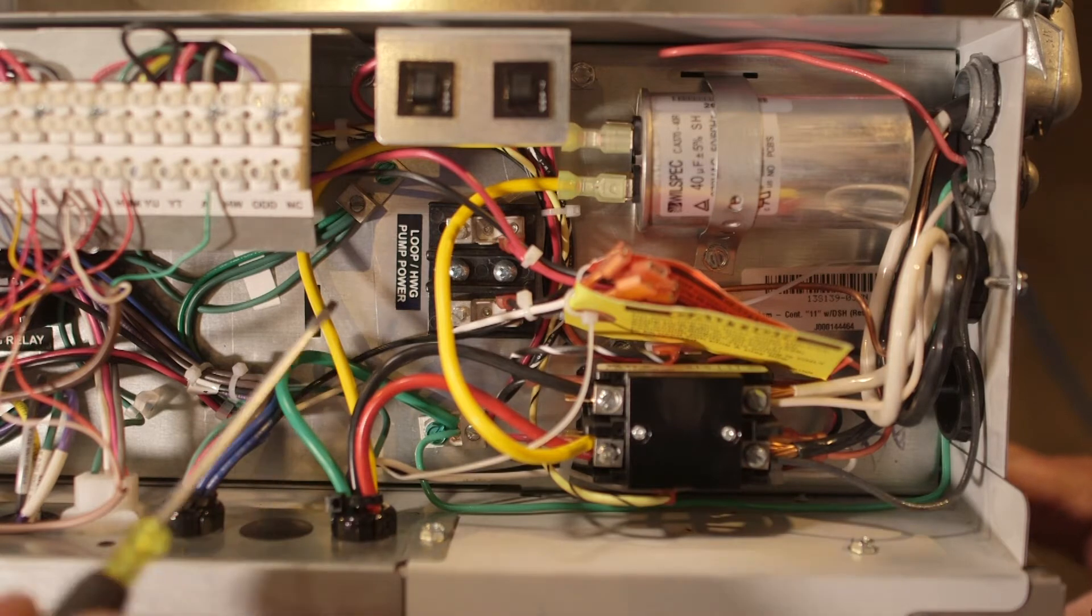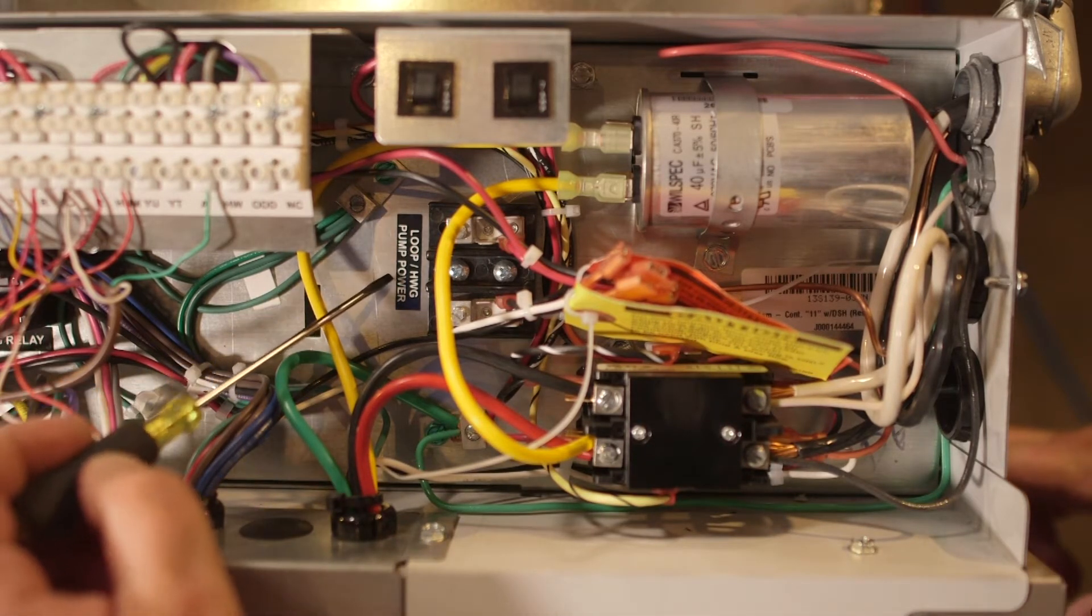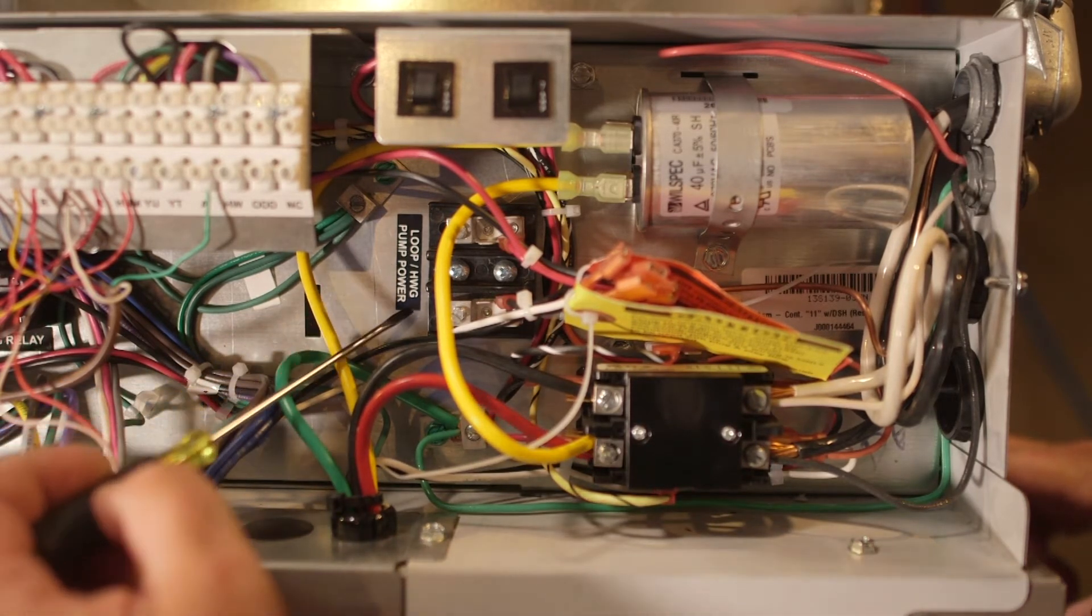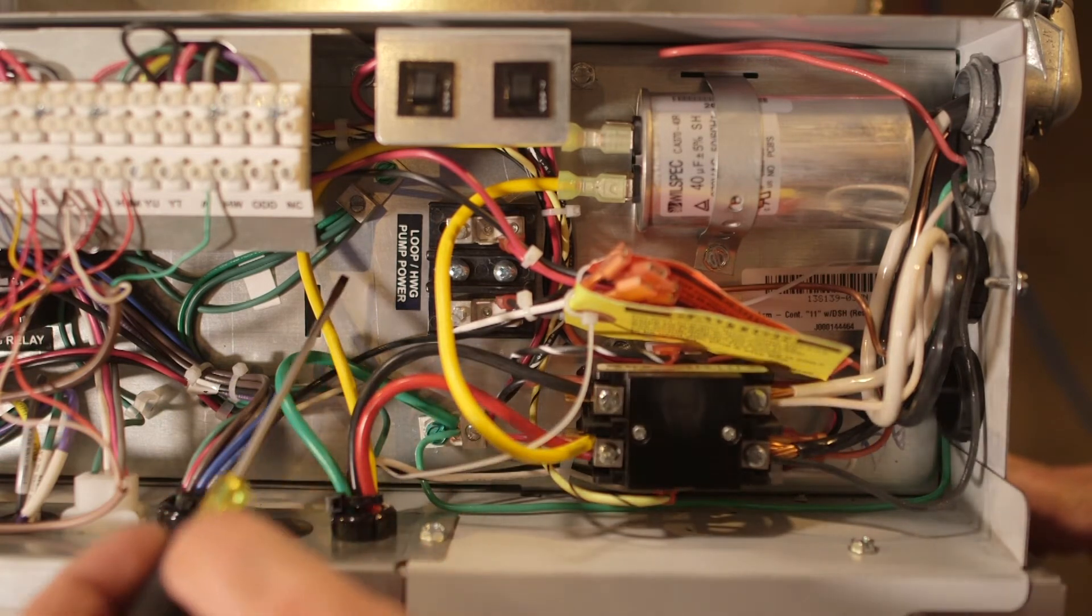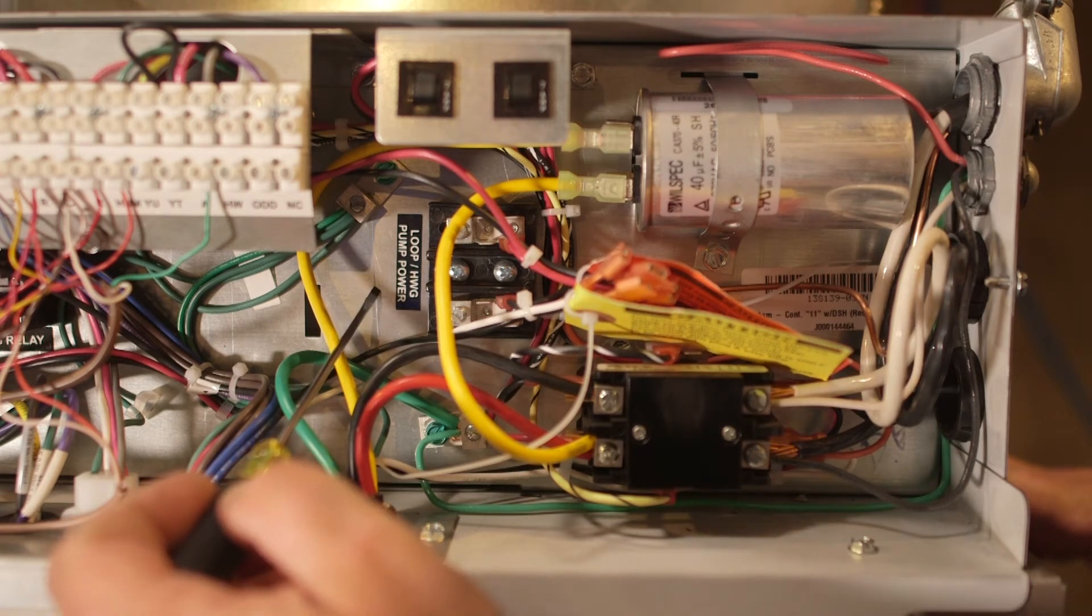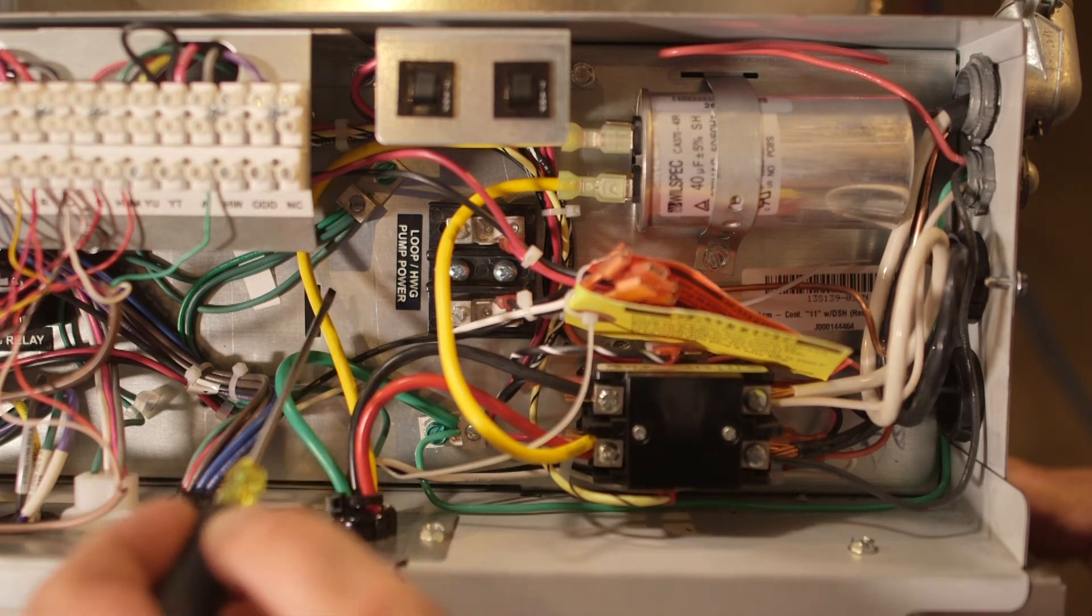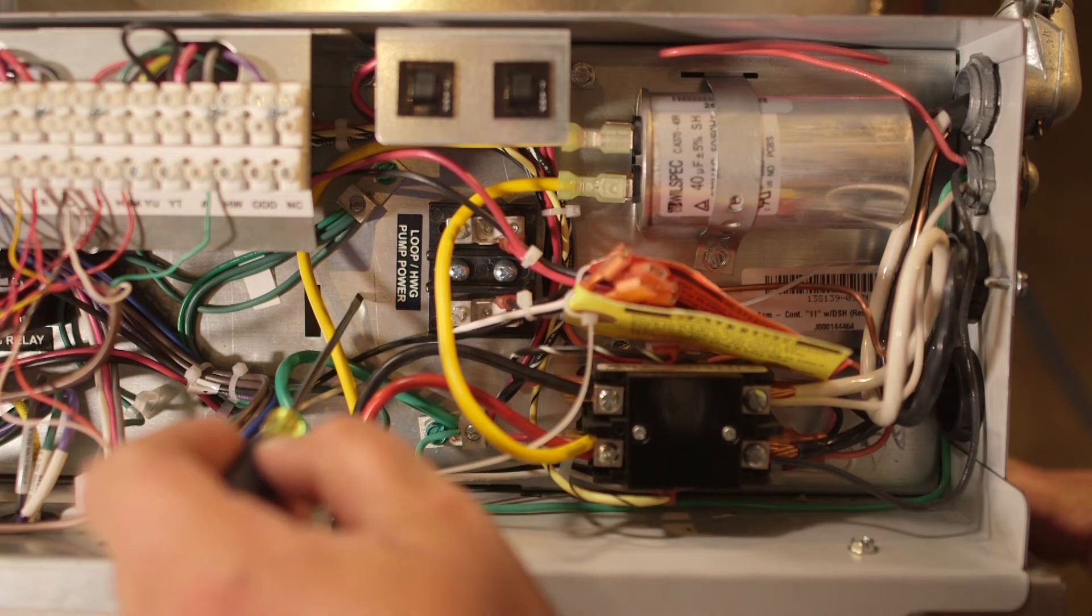This is the loop pump relay. And you can see here that there is a sticker talking about the loop pump and desuperheater power connections. So, if you had a single speed or a three speed selectable ground loop pump, this is where you would hook those up.